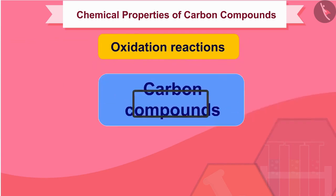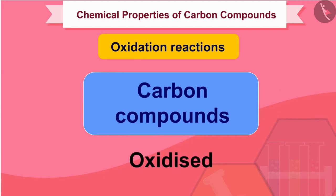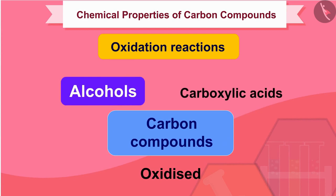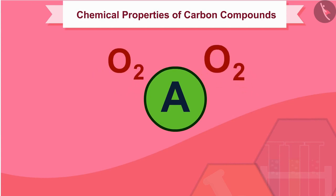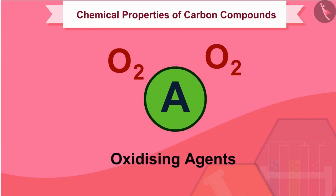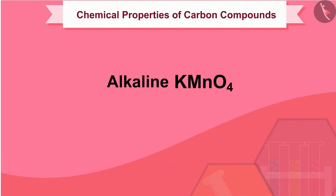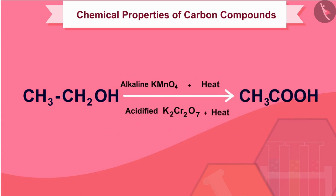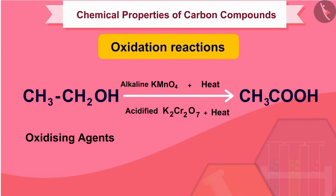The process in which a compound gains oxygen or loses hydrogen is called an oxidation reaction. Carbon compounds can be easily oxidized on combustion. In addition to complete oxidation, we have reactions in which alcohols are converted to carboxylic acids. Some substances are capable of adding oxygen to others; these are known as oxidizing agents. Alkaline potassium permanganate or acidified potassium dichromate oxidize alcohols to acids by adding oxygen to the starting material, and hence are known as oxidizing agents.